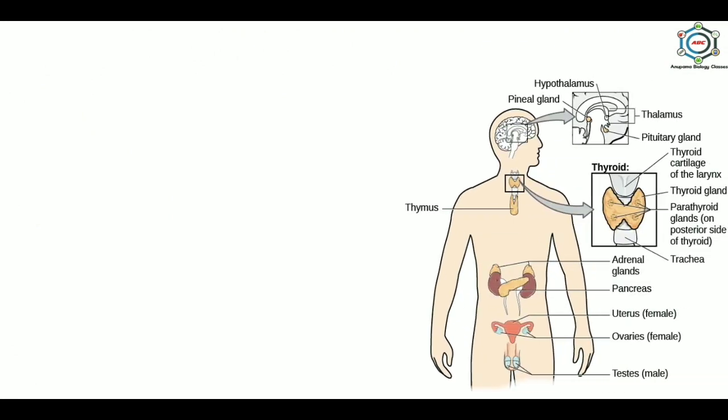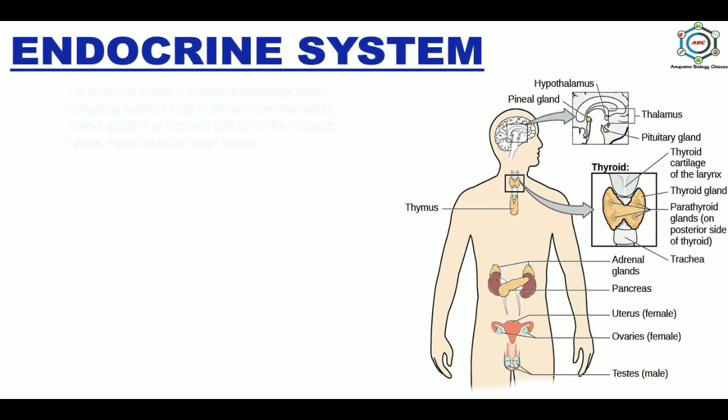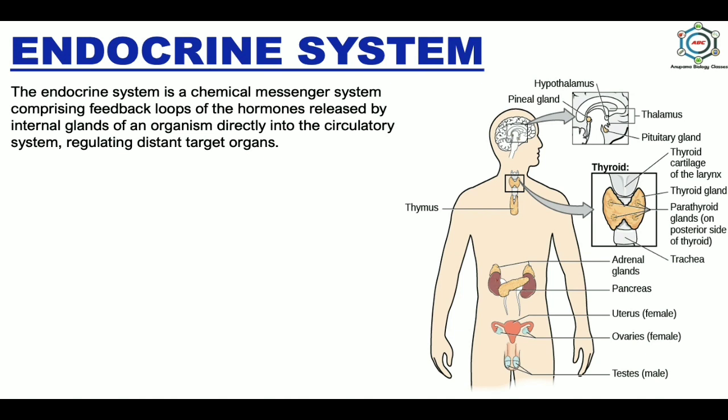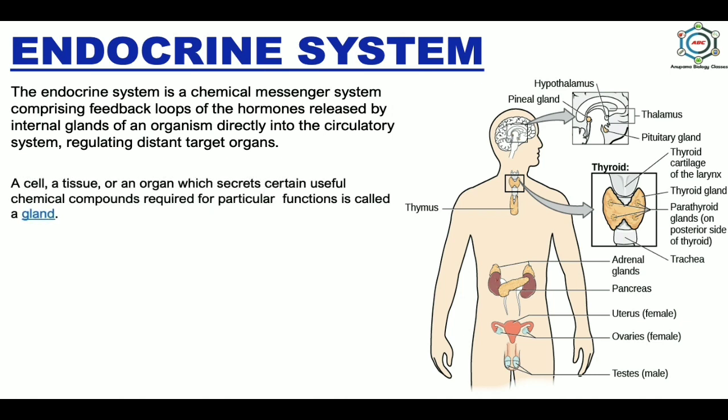And the last is the endocrine system. The endocrine system is a chemical messenger system comprising feedback loops of hormones released by internal glands of an organism directly into the circulatory system, regulating distant target organs. For the endocrine system, glands are required. Glands are a cell, tissue, or organ which secretes certain useful chemical compounds required for particular functions in our body.